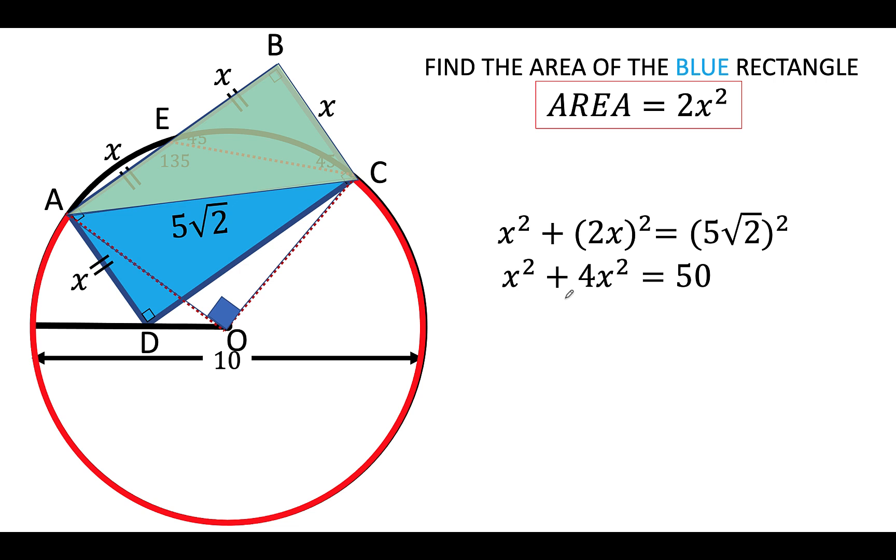So combining like terms, 1x² plus 4x² is 5x², copy the right side, and solving now for x², that is equal to 50 divided by 5 or 10 units.